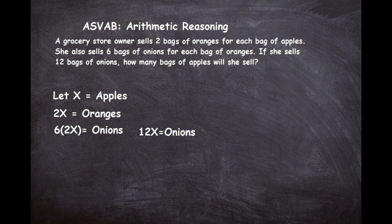Now let's look at the final part: if she sells 12 bags of onions, how many bags of apples will she sell? We know onions equals 12x, so we set 12x equal to 12. To solve, we divide both sides by 12. On the left side, 12 divided by 12 gives 1x, and on the right side, 12 divided by 12 is 1. So x equals 1.